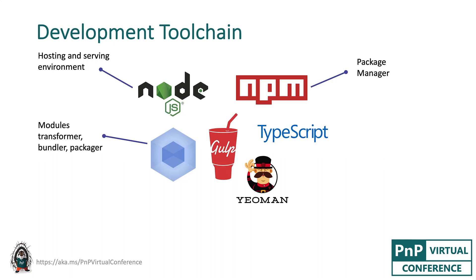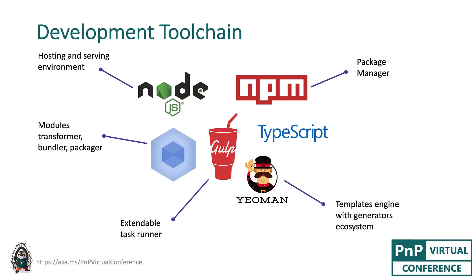Webpack is a modules bundler, transformer, and packager. It compiles your TypeScript and bundles everything in chunks that will be loaded to the page. Gulp is an extendable task runner that allows you to create execution flows for such routines like building the projects, and it also allows us to inject our custom tasks in SharePoint framework build routine as well. And if you look at Webpack and Gulp, they are similar to MSBuild in .NET world. Yeoman is a templates engine based on a generator ecosystem, and you can think of a generator as a template with conditional configuration based on some parameters or prompts.